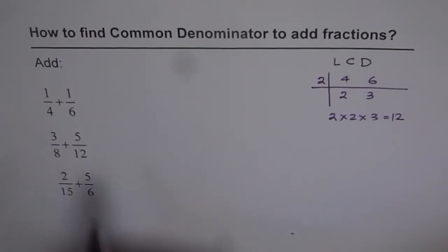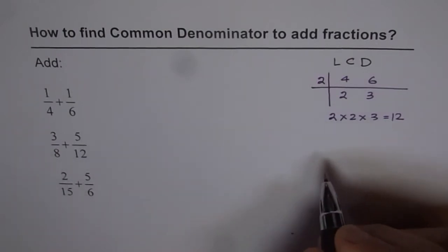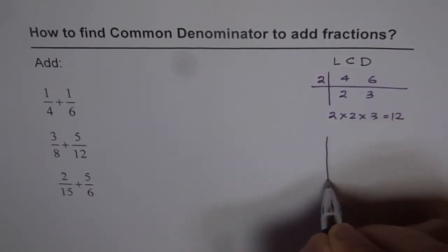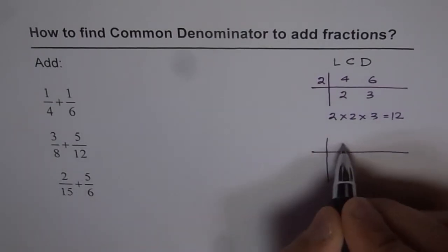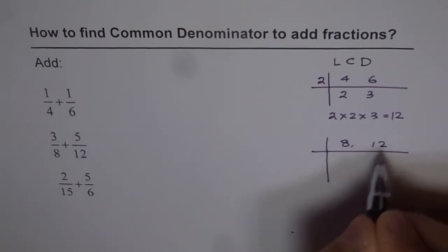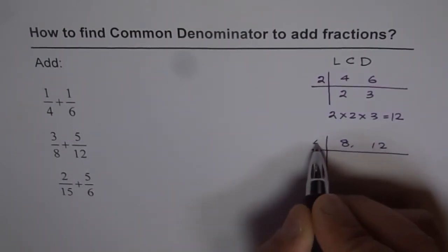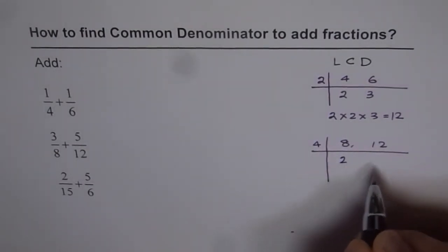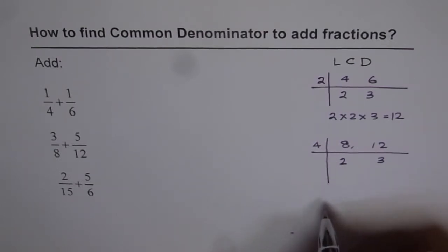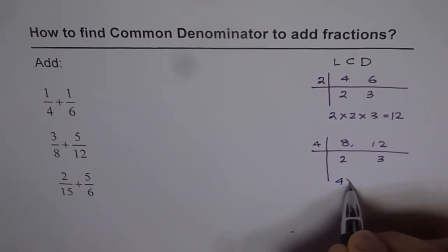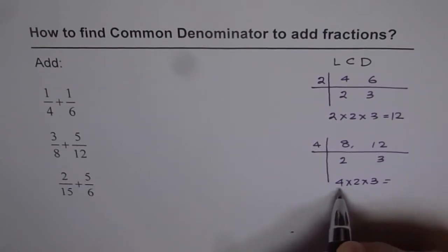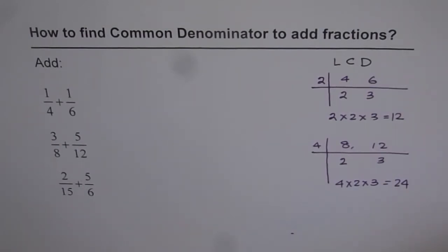Similarly we can adopt this method for the second one also. Here the denominators are 8 and 12. Let us try to factor the common factors. So here we have 8 and 12. We can divide both by 4. What do we get? 4 times 2 is 8, 4 times 3 is 12. So the least common denominator here will be 4 times 2 times 3. So 4 times 2 is 8, 8 times 3 is 24. So in this case 24 is the least common denominator.